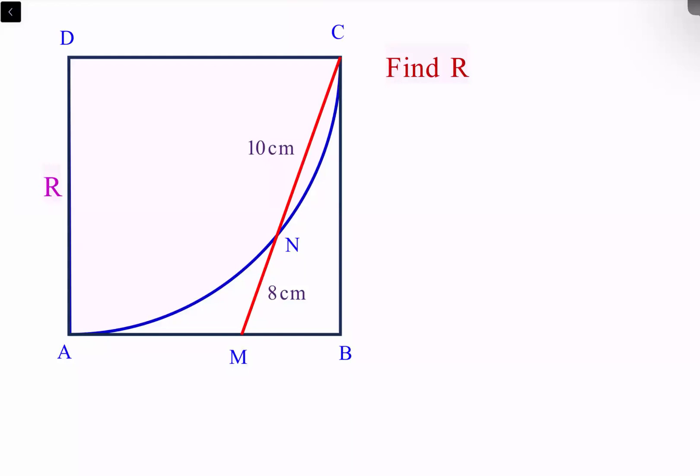In today's question ABCD is a square. Inside it we have a quadrant with radius R, so R is also the side of the square. We have drawn a line segment CM which is cutting the circle at point N. The lengths of CN and MN are given as 10 and 8 centimeters. Using this data we have to find the radius of the quadrant or side of the square.